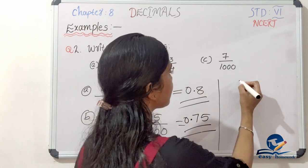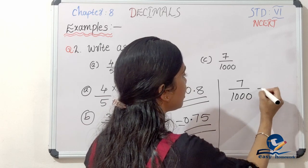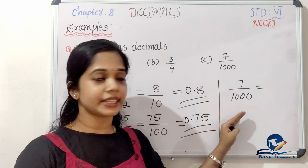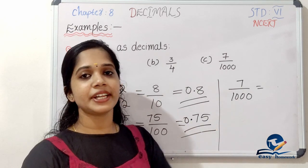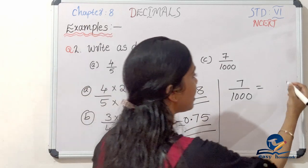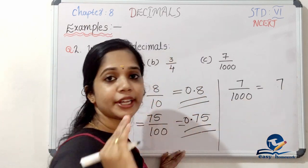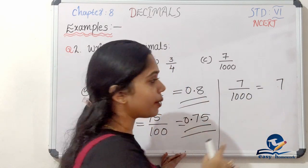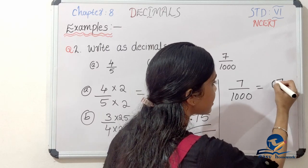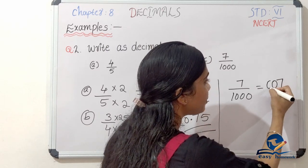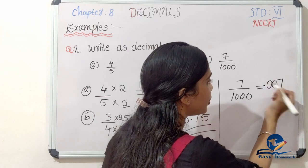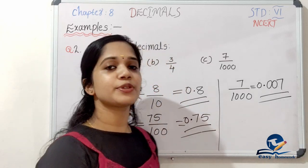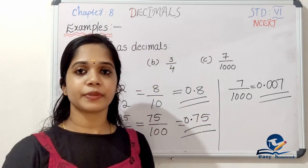Last question. If you want to make a power of 10 denominator, you find the equivalent. Here it is the 1st place, 2nd place, 3rd place — 1, 2, 3 — so we move three decimal places. The answer is 0.007.